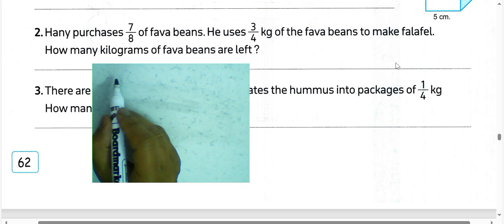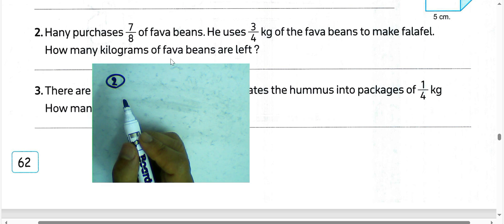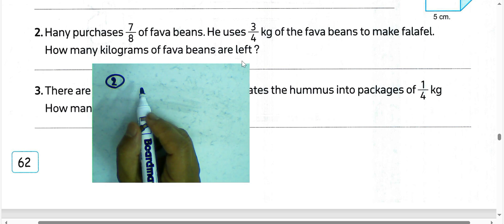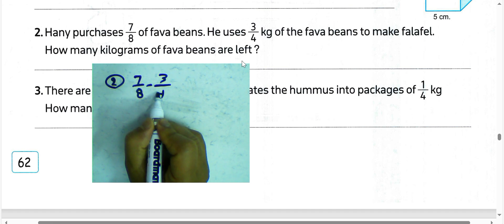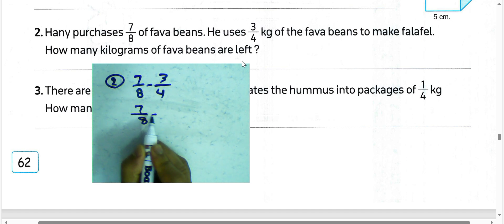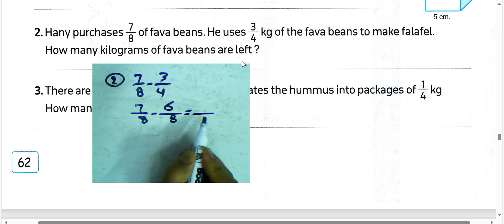Next question number 2. Harry purchases 7/8 of fava beans. He uses 3/4 kg of the fava beans to make falafel. How many kilograms of fava beans are left? We find the difference: 7/8 subtract 3/4. Write the least common multiple between two denominators. The result equals 1/8 kilogram.